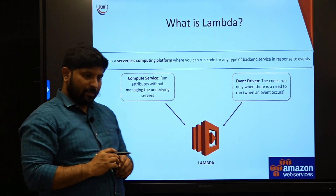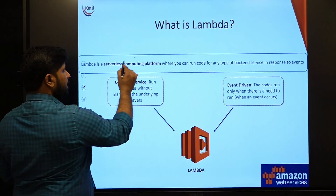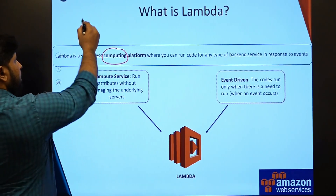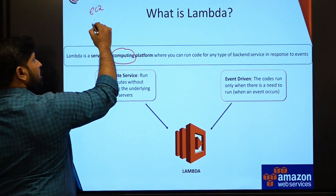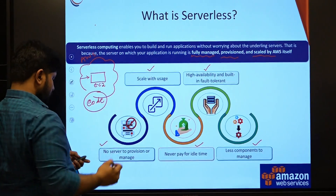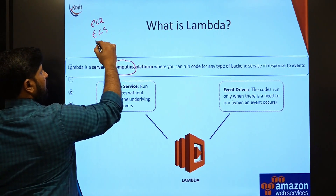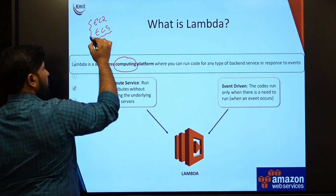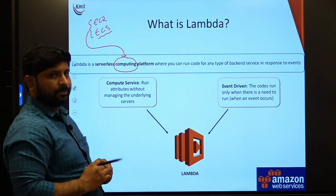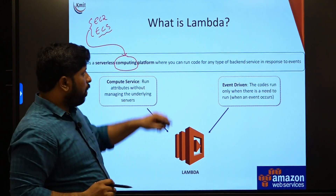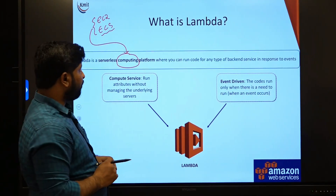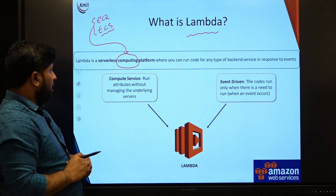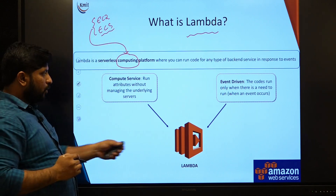What is Lambda? Lambda is a computing platform. In AWS, we have other computing platforms such as EC2, ECS (Elastic Container Service). All of these provide computing facilities. One such computing facility provisioned by AWS is Lambda. Later, we will be comparing Lambda and EC2 in further slides.